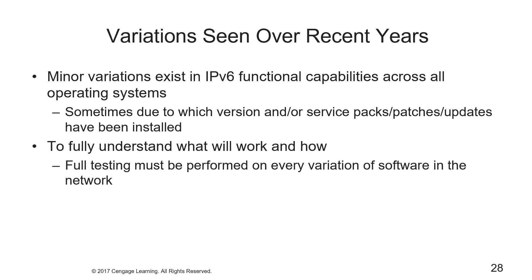Some minor variations exist in v6 functional capabilities across all operating systems, sometimes due to which version, service packs, patches, or updates have been installed. To fully understand what will work and how systems will behave, full testing must be performed on every variation of software in the network — not just client and server, but infrastructure, embedded, special-purpose devices, IoT, and anything connected to the network.